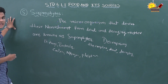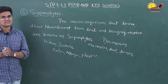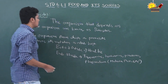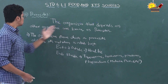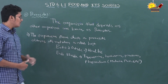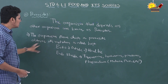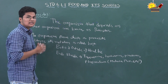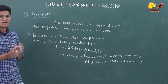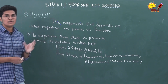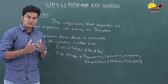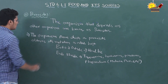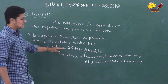The sixth and last category of organisms is parasite. The organism that depends on another organism for nutrition is known as a parasite. The organism from which a parasite obtains its nutrition is called the host. For example, a mosquito bites us and sucks our blood, so we are the host for mosquitoes.